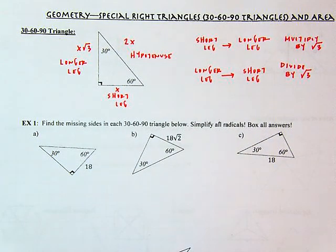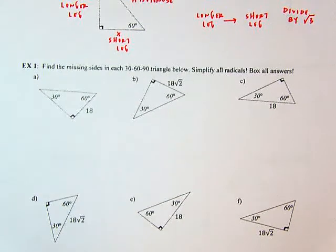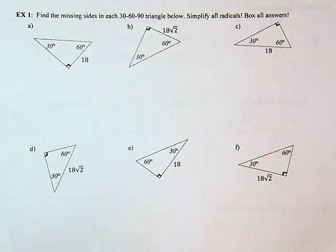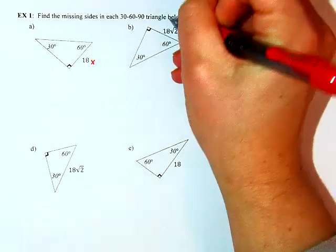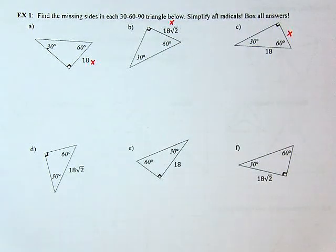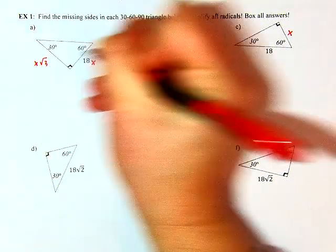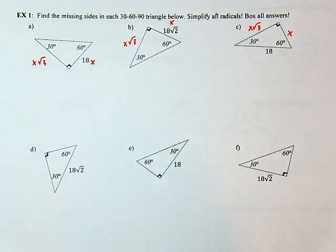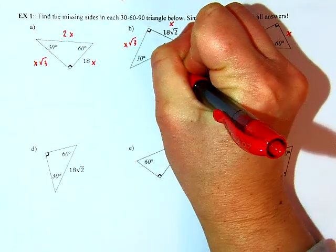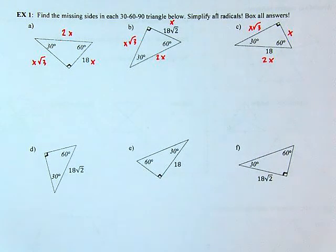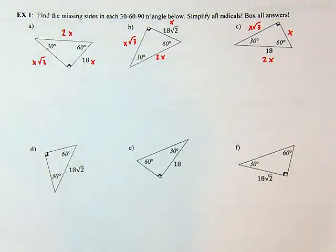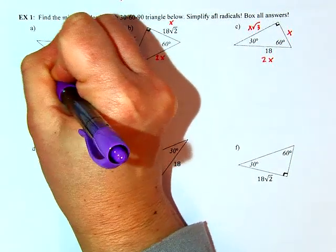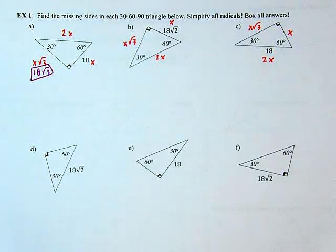In my first example, I'm giving you the short leg. I'll label all sides: short leg opposite the 30-degree angle is x, the longer leg is x root 3, and the hypotenuse is 2x. So if my short leg is 18, my longer leg is 18 root 3, and my hypotenuse is 2 times 18, so 36.